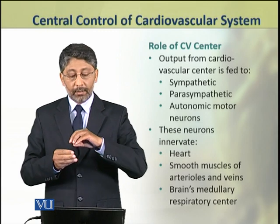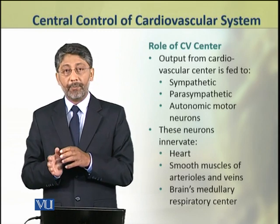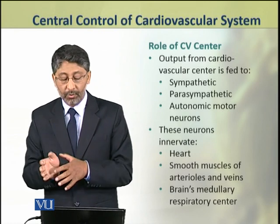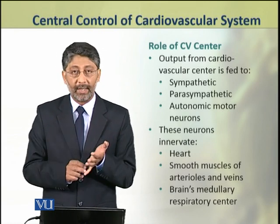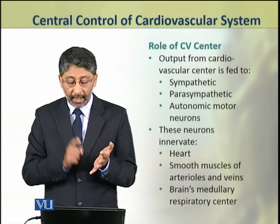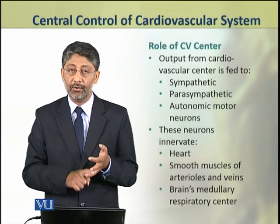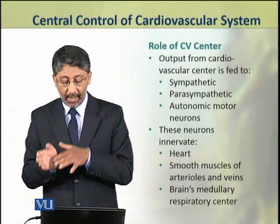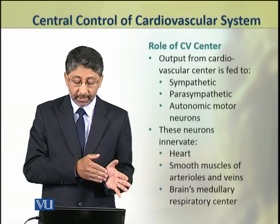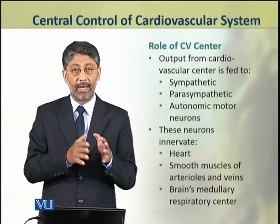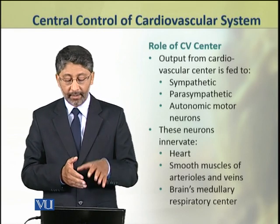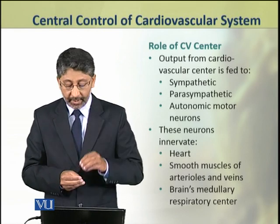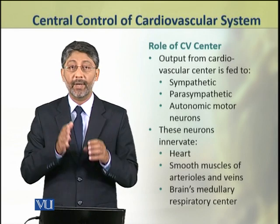The output from the cardiovascular center is fed to the sympathetic, parasympathetic, and autonomic motor neurons. These neurons innervate the heart, the smooth muscles of arterioles and veins, and also innervate the brain's medullary respiratory center.